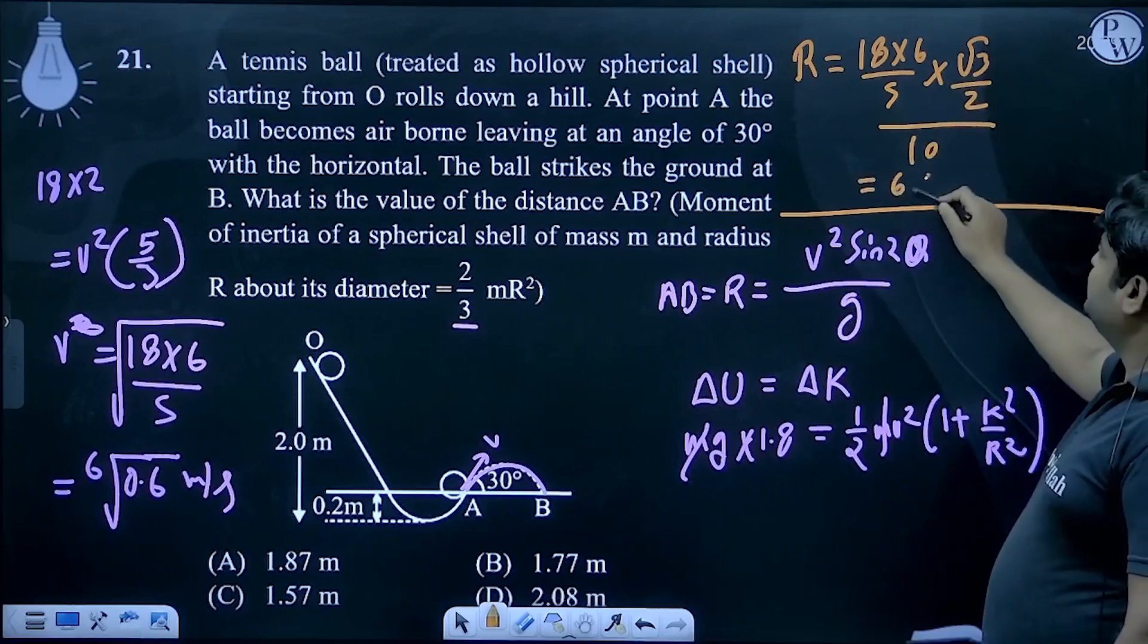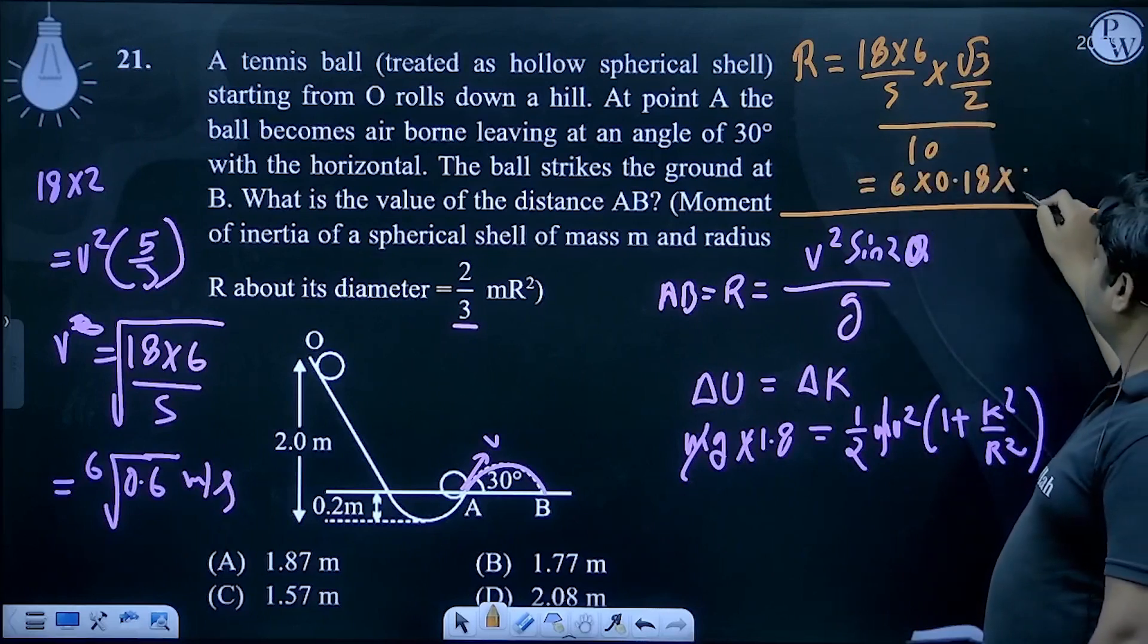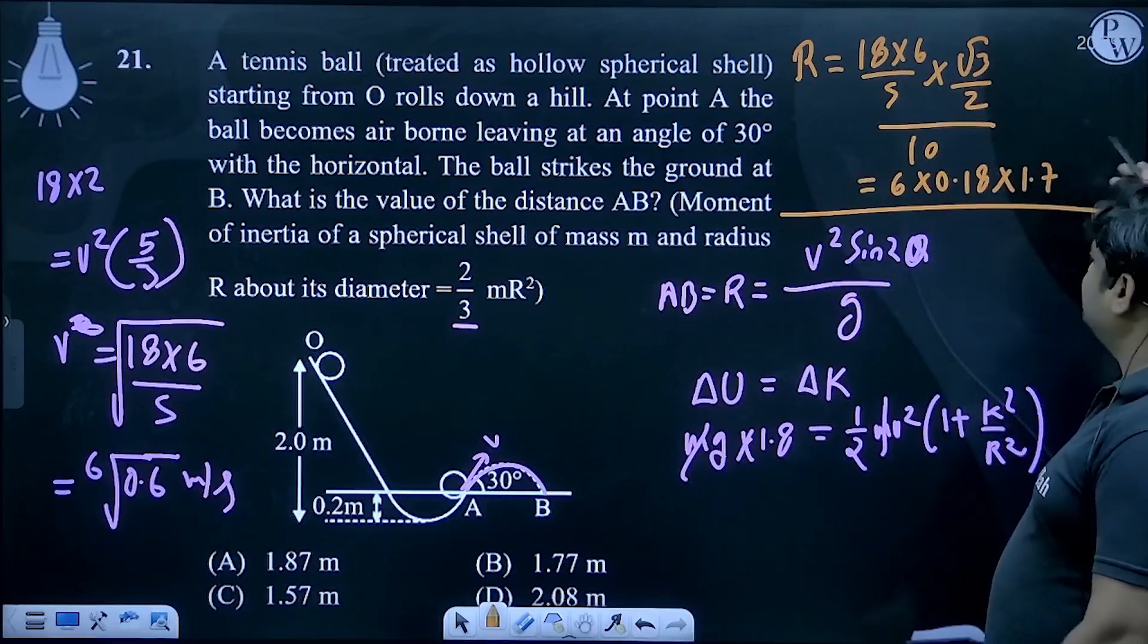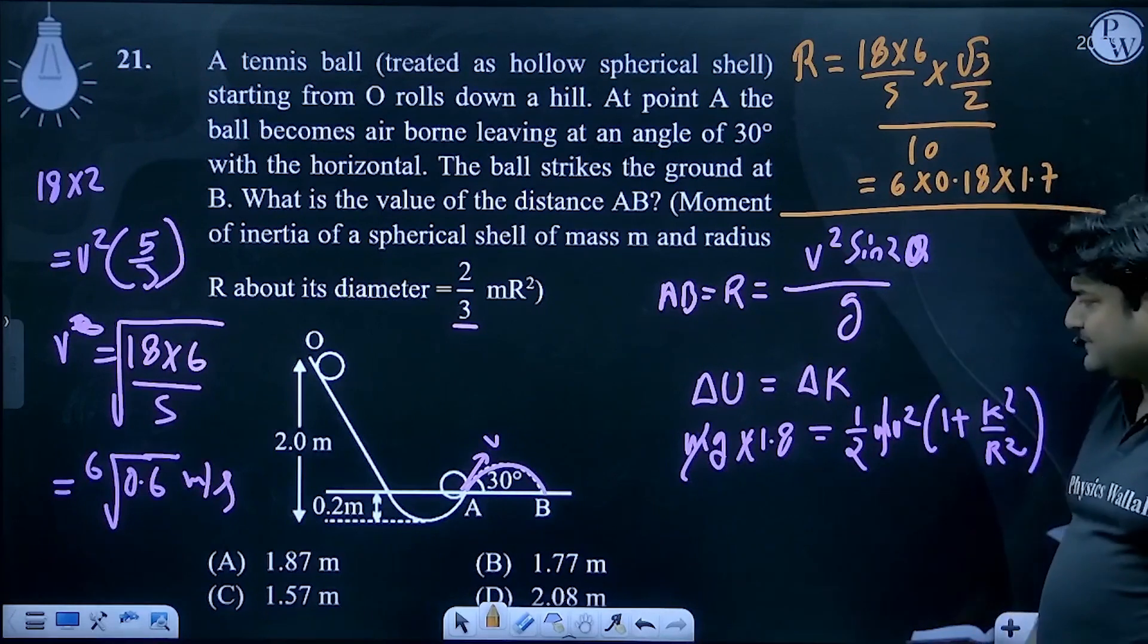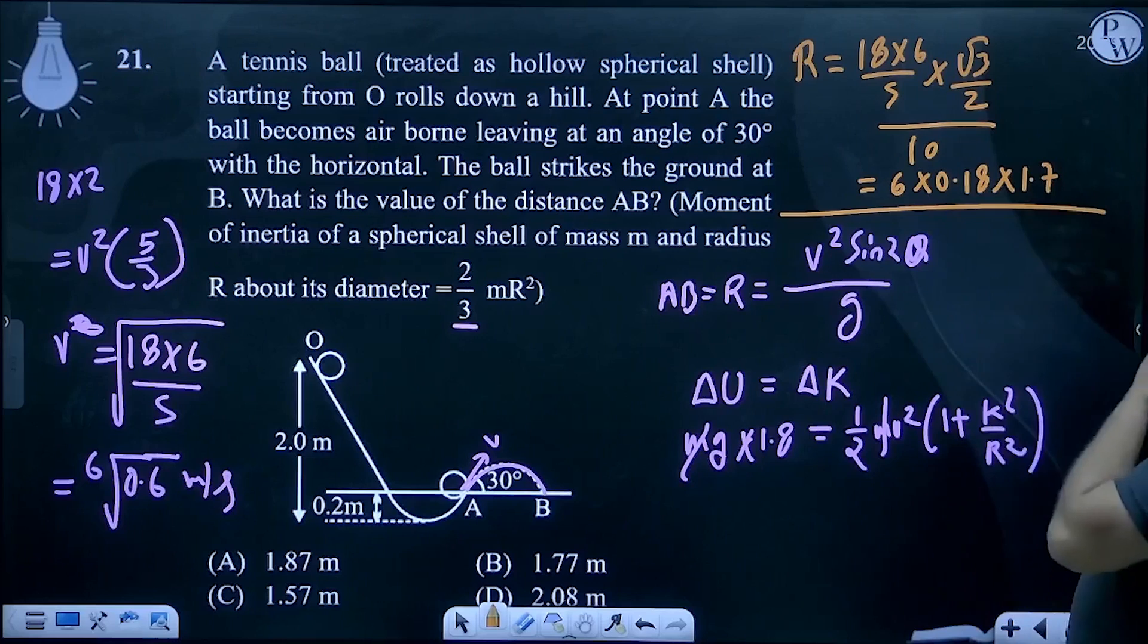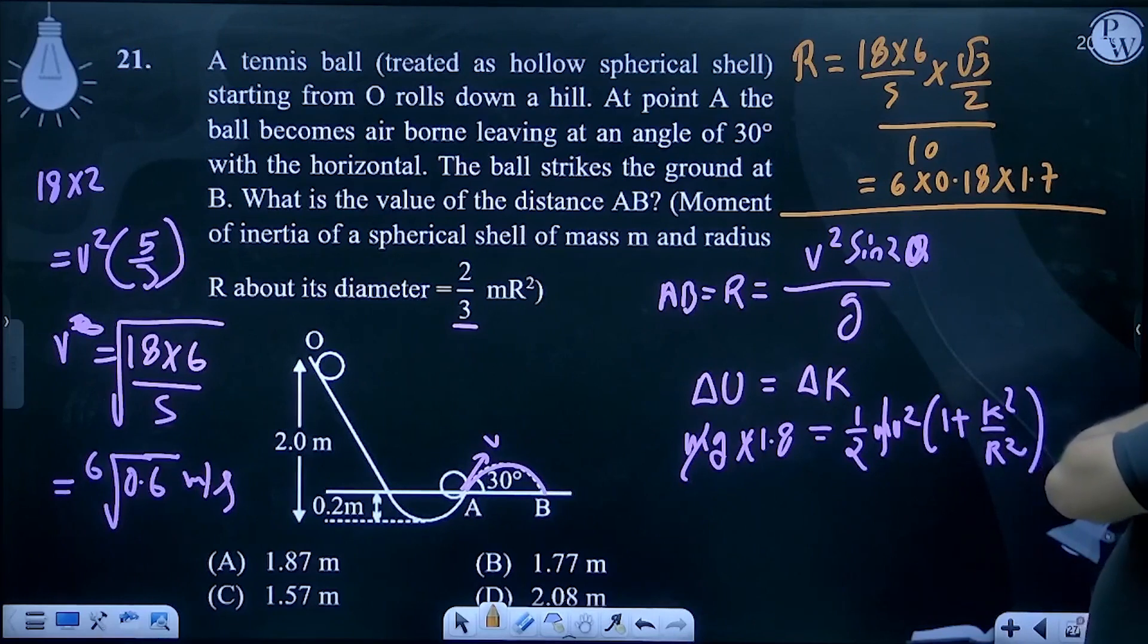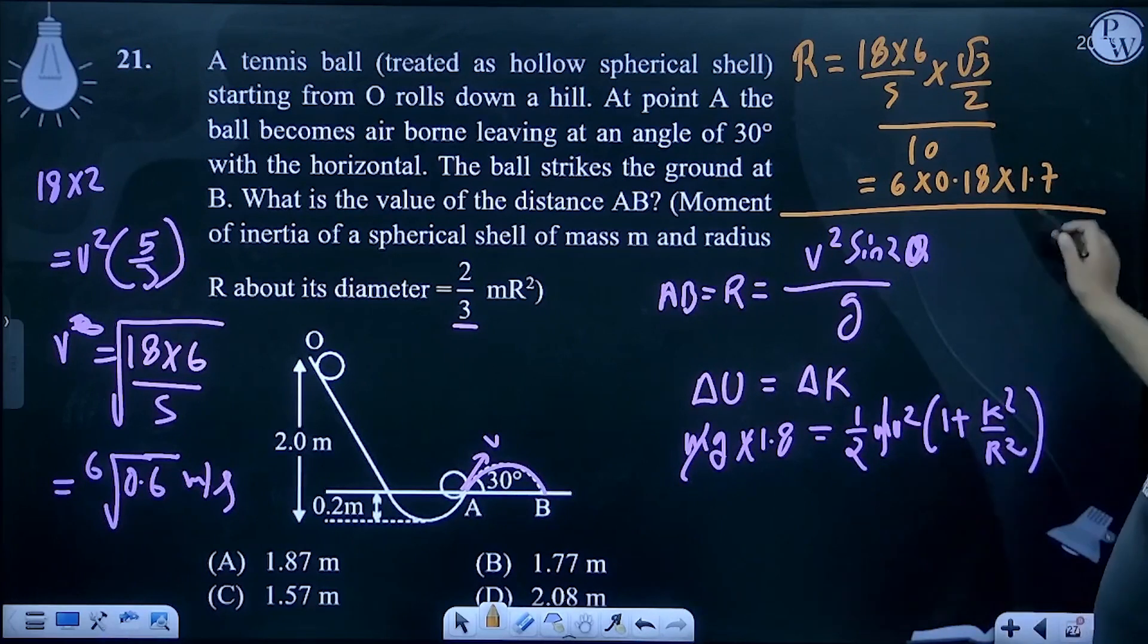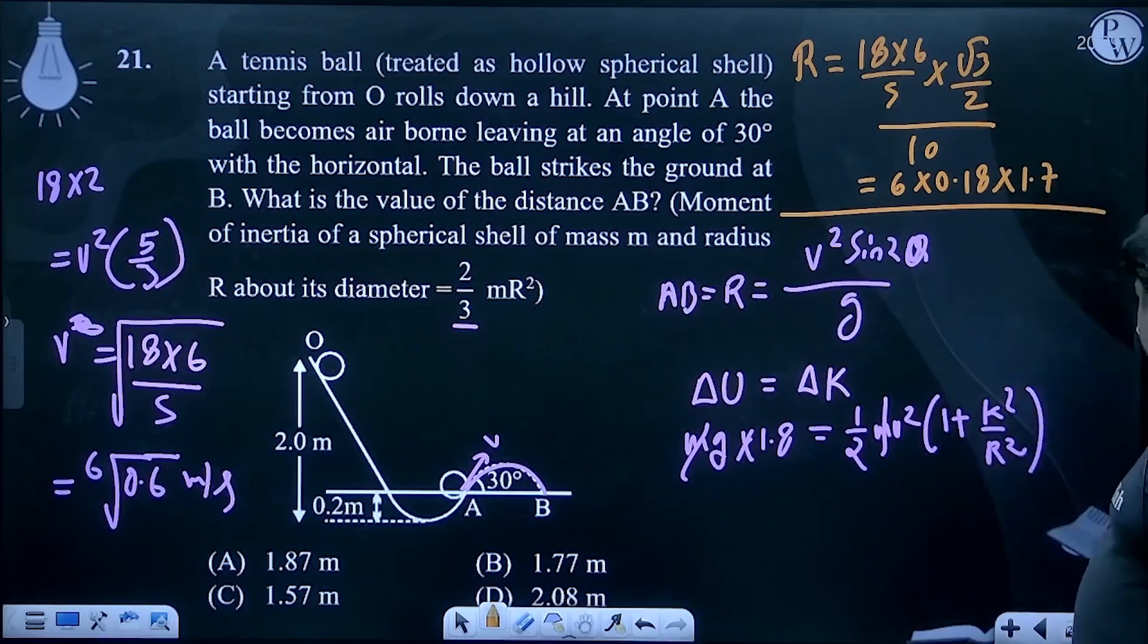This equals 6 × 0.18 × 1.7 approximately, which should give us 1.7 meters or something close to 1.7. You can multiply to verify the exact answer.